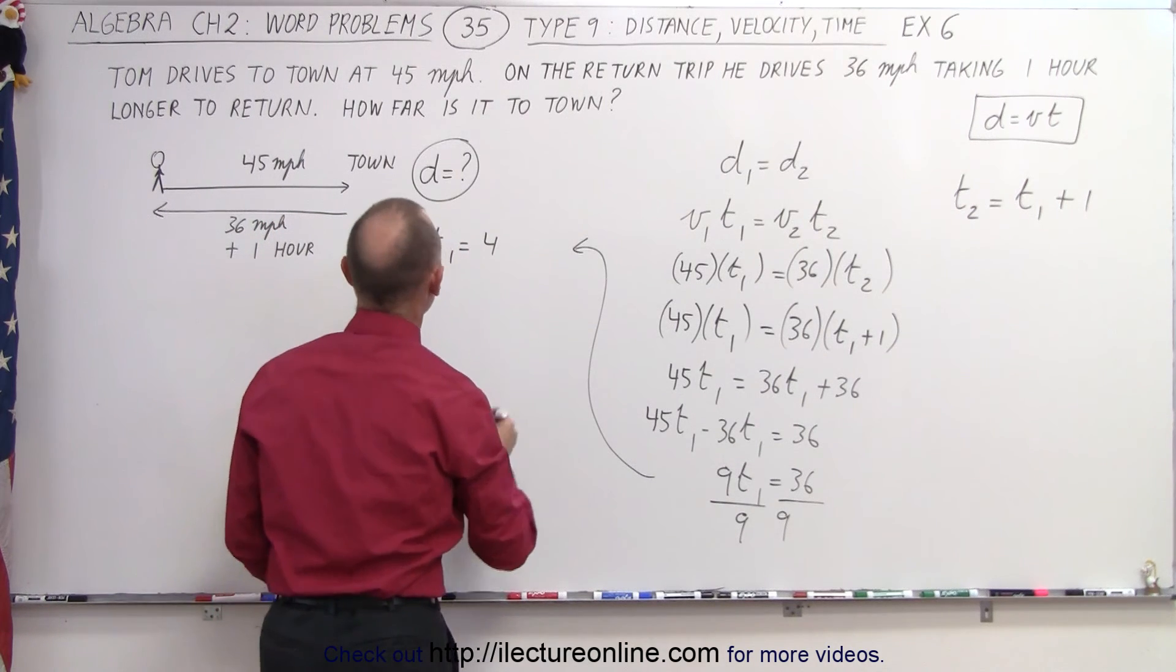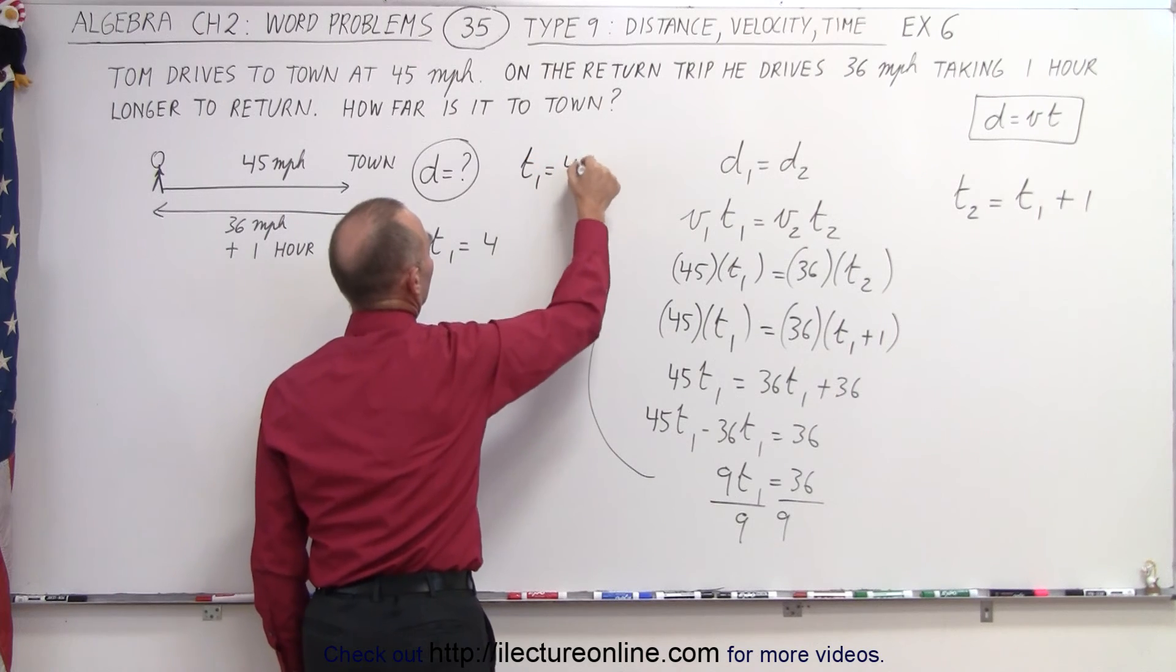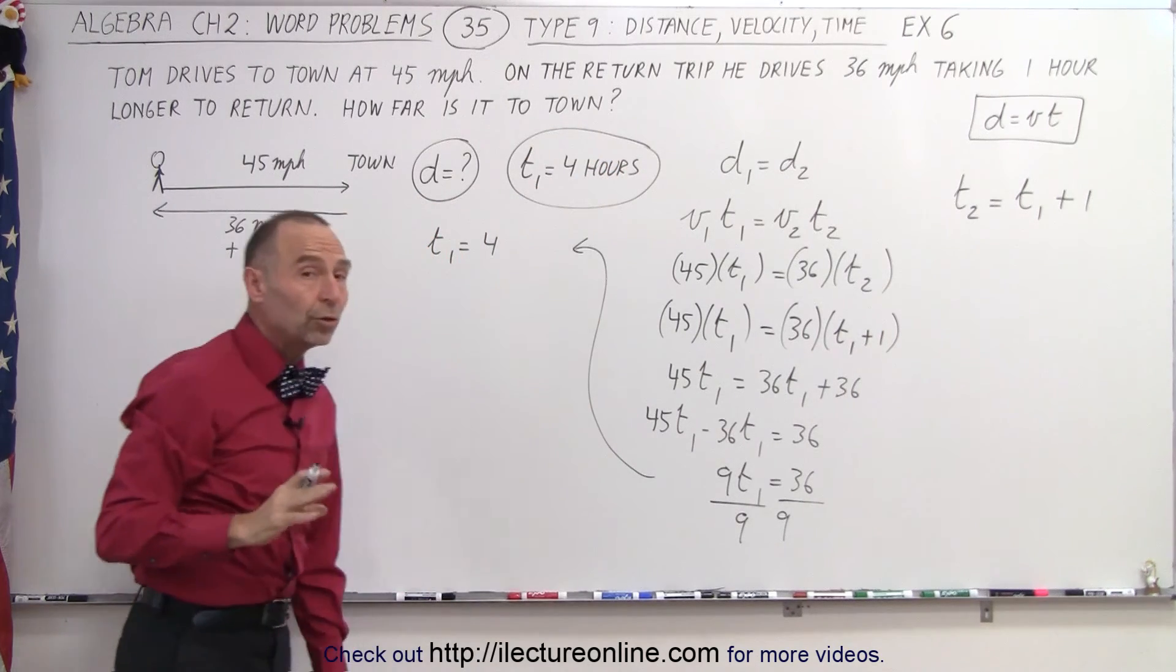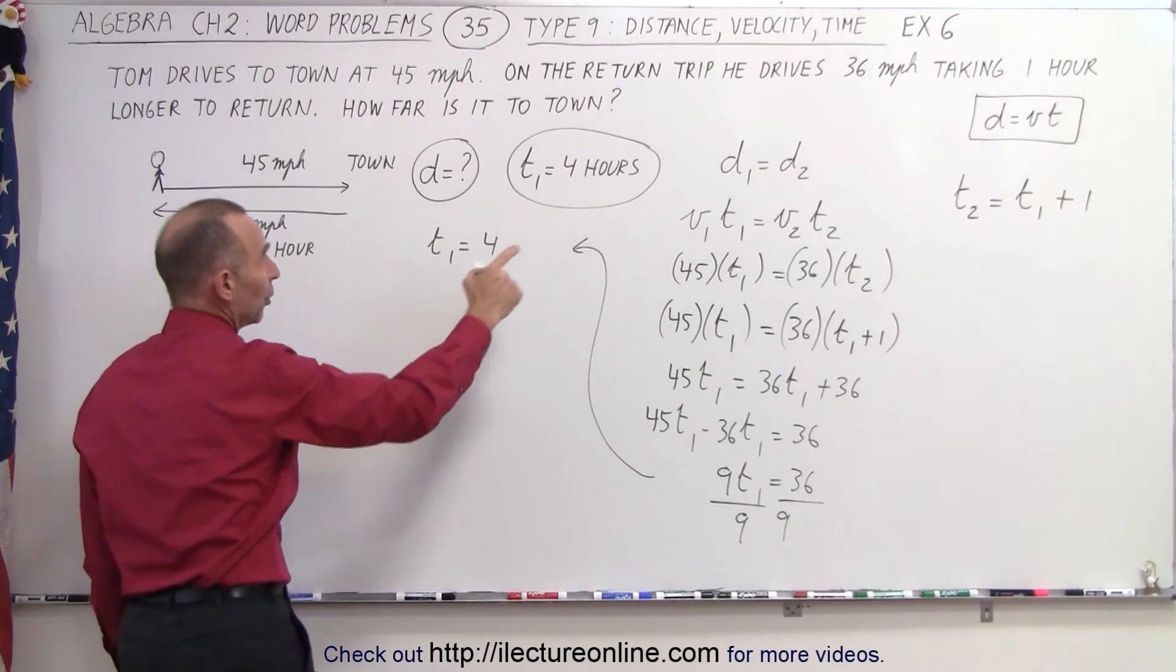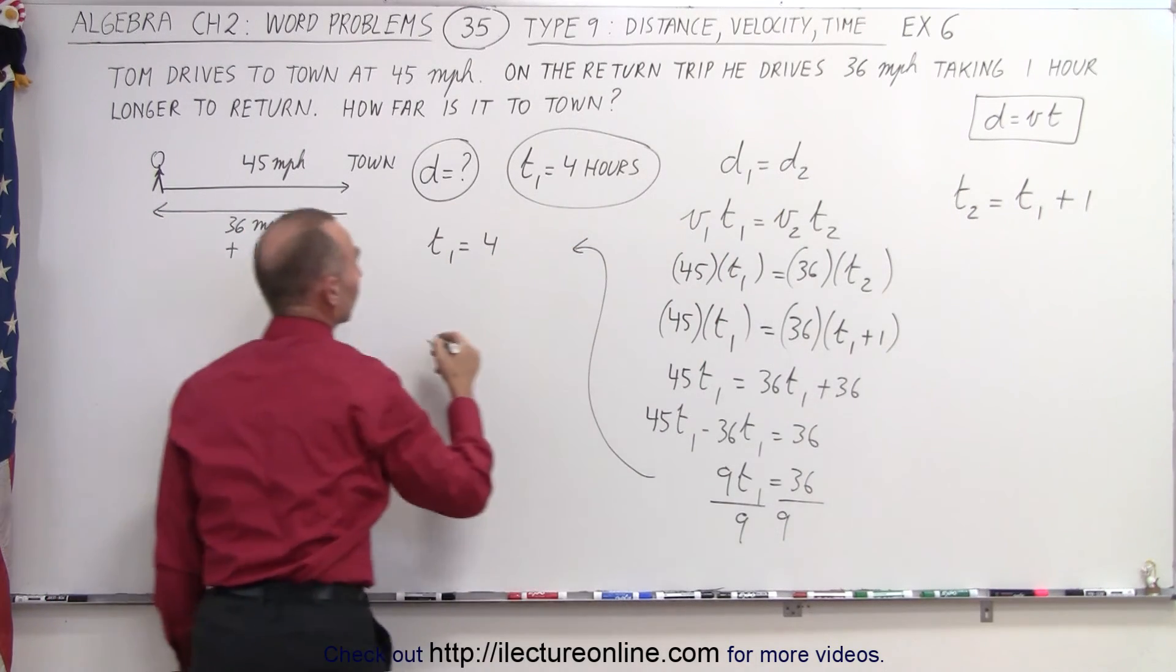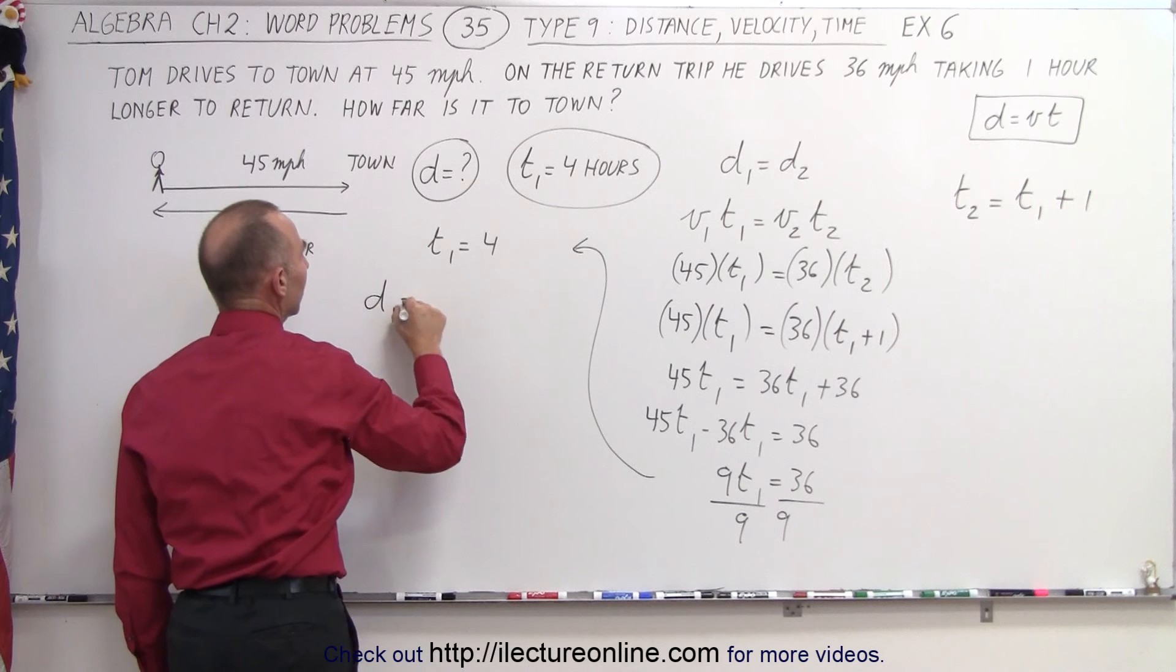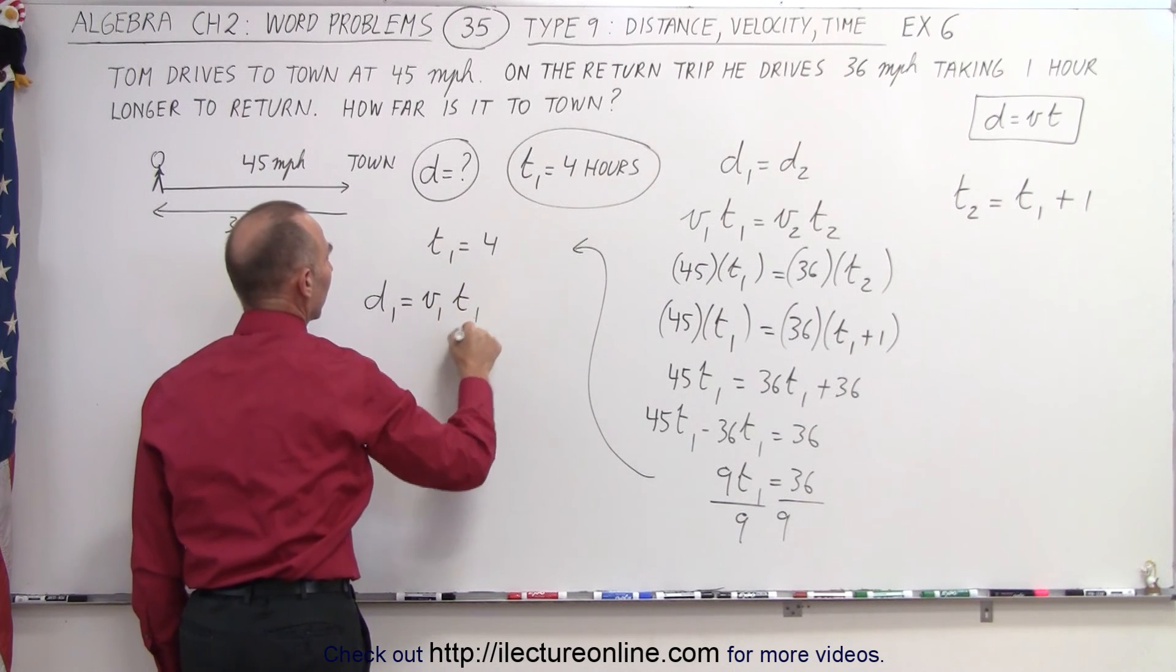In other words, t₁ is equal to 4 hours. Now that we know the time for t₁, we can now find distance one. And we know that distance one is equal to distance two. So distance one equals velocity one times time one.